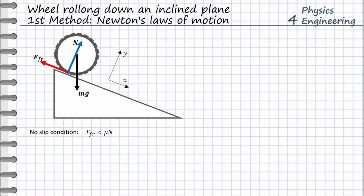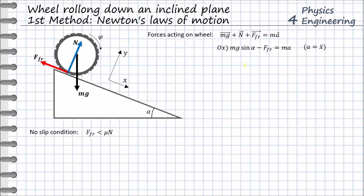We define the coordinate system as shown in the picture and write the second Newton's law for the system. In our notation, a is the linear acceleration of the wheel. But this equation is not enough to solve the problem because we have two unknowns: the linear acceleration and the friction force. Therefore we need one more equation. To obtain this equation, we move our coordinate system to the center of the wheel and sum all the torques acting on the wheel around this point. Since the reaction force N and gravity force are directed through the center of the wheel, we have only one torque, which is the friction force times the radius of the wheel.